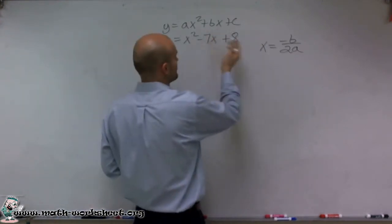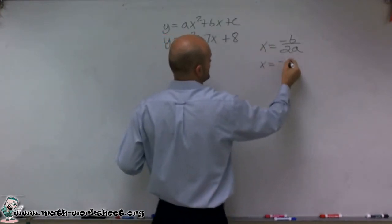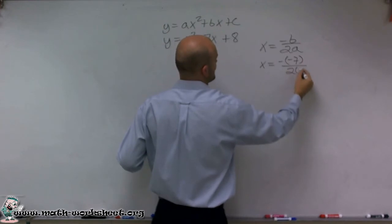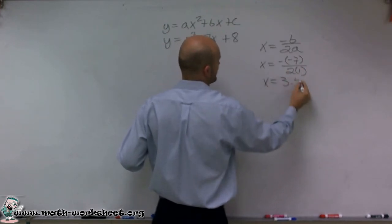For this equation, we're going to have a different axis of symmetry. When I plug this in, I have x equals negative negative 7 divided by 2 times 1. That ends up equaling x equals 3.5.